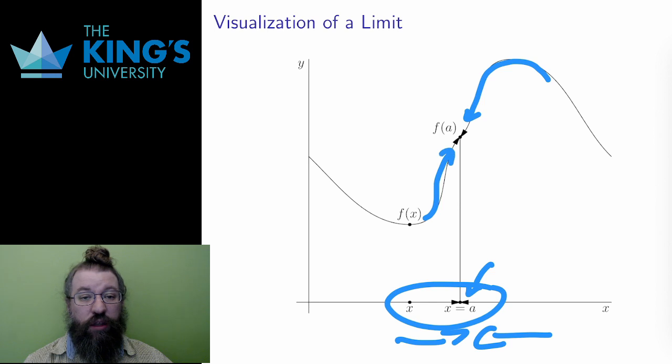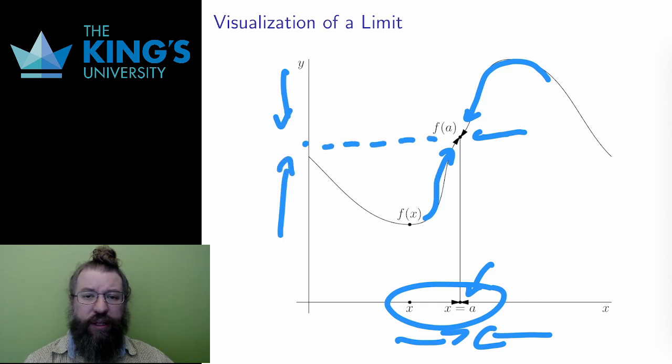On the graph, the function is getting closer to the point a, f of a. On the y-axis, the outputs of the function are approaching f of a. This may seem a bit trivial, and indeed, for functions which are drawn as unbroken curves, it is a bit trivial, but I hope the idea of approach still makes sense.